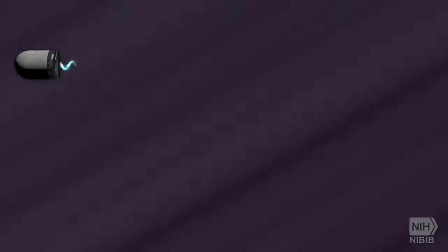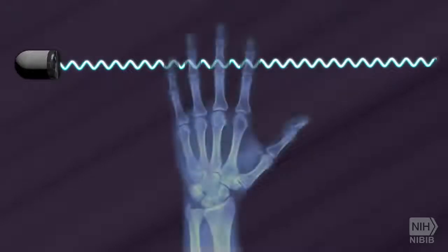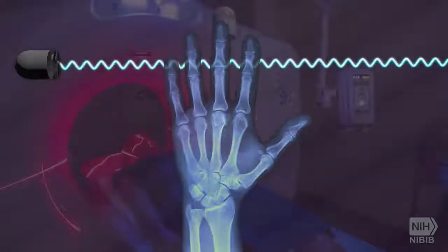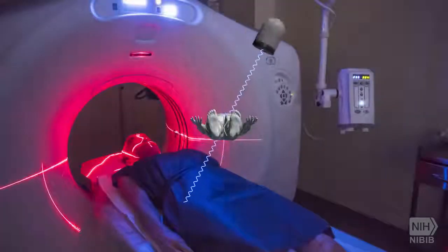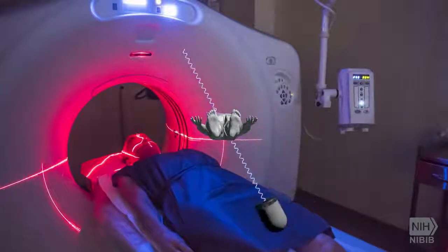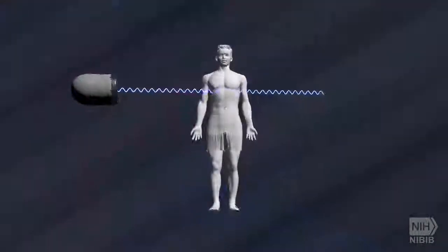A conventional x-ray uses a fixed tube that sends x-rays in only one direction, while a CT scanner uses a motorized x-ray source that shoots narrow beams of x-rays as it rotates around the patient.